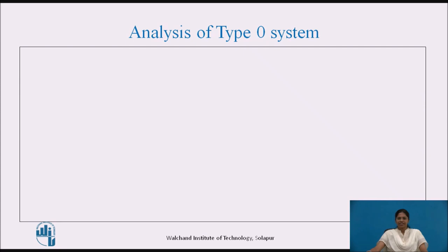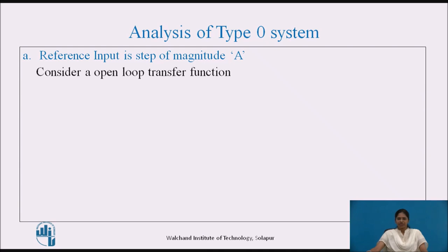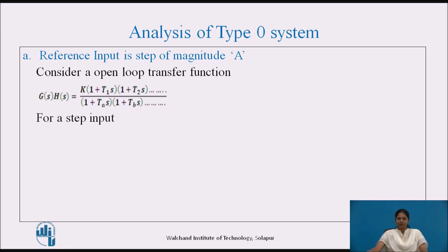Let's see the analysis of Type 0 system. Consider the first reference input of step of magnitude A. The open loop transfer function of a Type 0 system is given as G(S)H(S) equal to K into (1 + T1S)(1 + T2S) divided by (1 + T2S)(1 + TbS). For a step input, the error coefficient is given as Kp equal to limit S tends to 0 of G(S)H(S). After solving the limit, we get Kp equal to K.